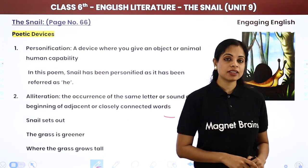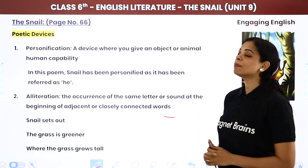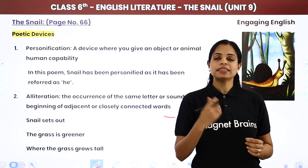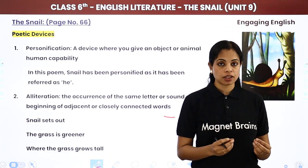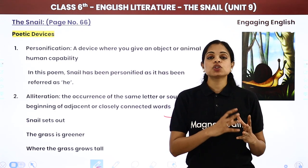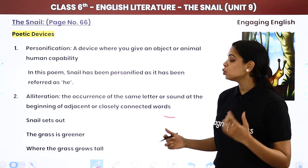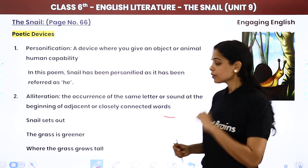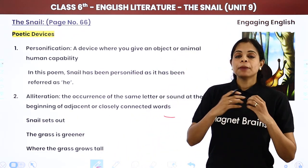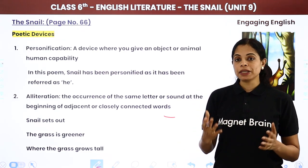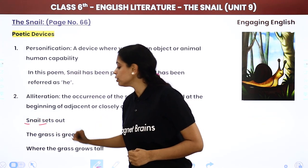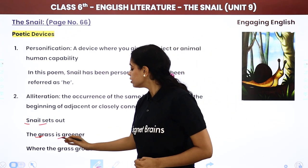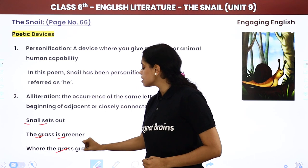So this was the summary and now the poetic devices. So majorly ismein do poetic devices use hui hain. Ek hai personification — kyunki poori poem mein snail ko 'he' karke bola gaya hai. He goes out, he sets out — jabki snail ek animal hai jiske liye hum 'it' use karte hain. Toh yahaan pe poet ne usko as a human treat kiya hai, that's why he has used 'he'. He has referred to the snail as he, aur isi liye isko bolenge humein personified hai. Doosra hai alliteration — matlab jahan pe poem mein ek hi line mein same consonant sound repeat hota hai. Jaisi yahan pe hai 'snail sets out' — toh yahaan 's' ka sound repeat ho raha hai. 'The grass is greener' — toh yahaan 'gr' ka sound repeat ho raha hai. 'Where the grass grows tall' — yahaan pe bhi 'gr' ka sound repeat ho raha hai.